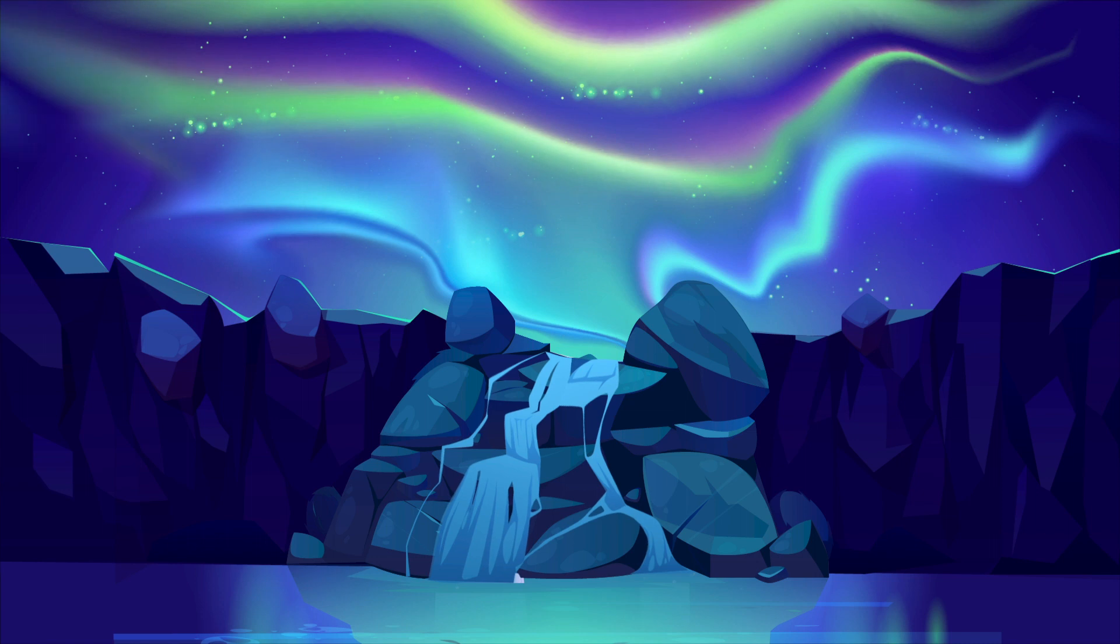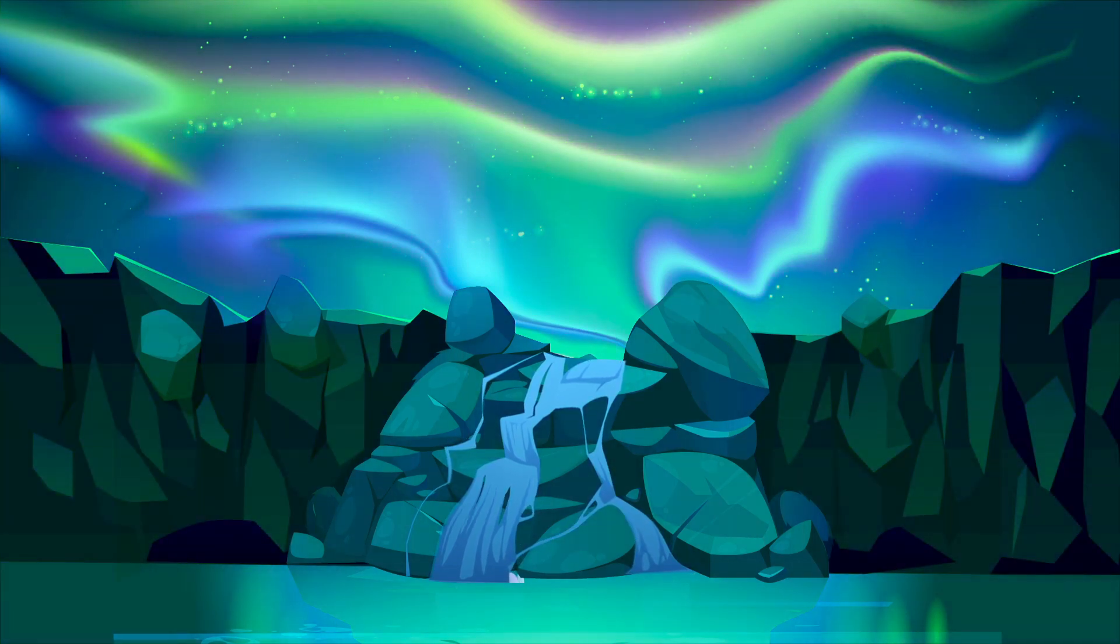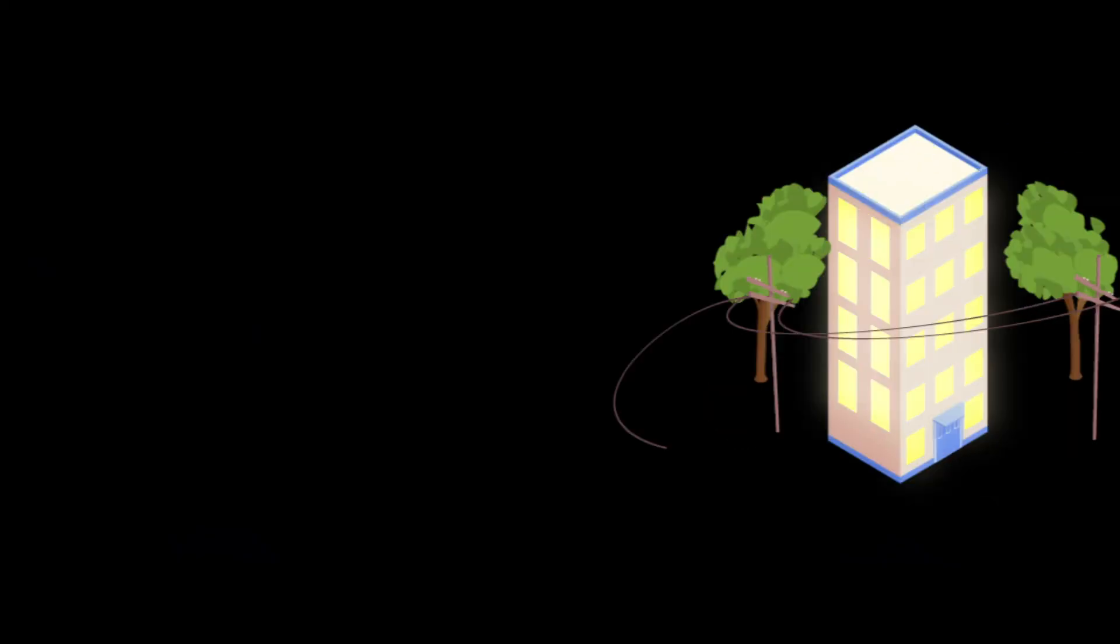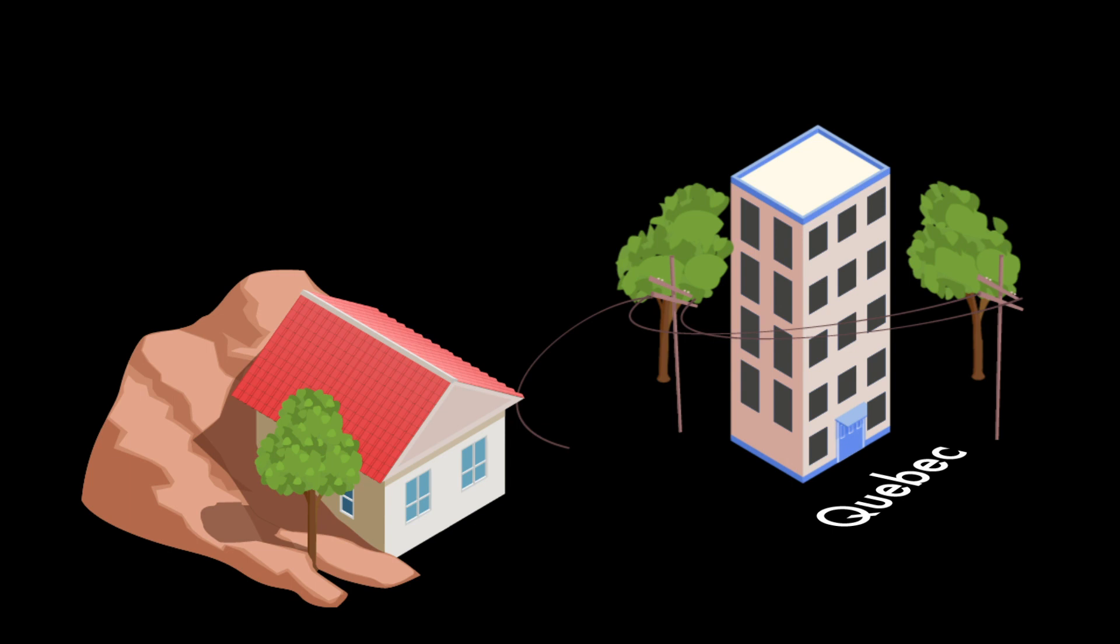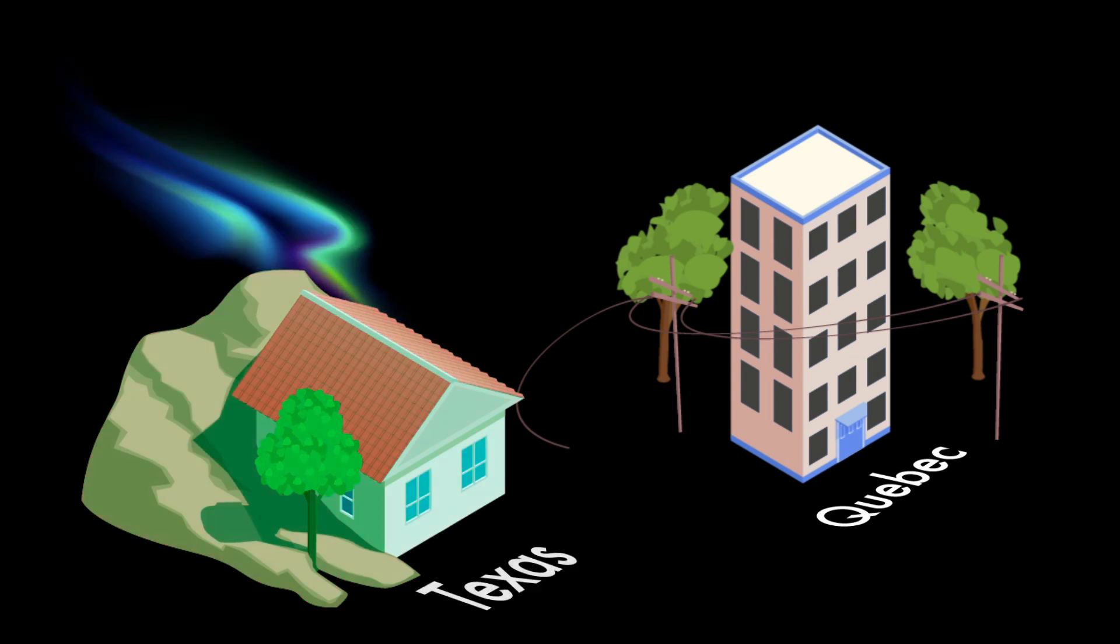Occasionally, these sunborn gales whip up so fantastically that they can kick us right in our delicate electronics. One celestial storm in 1989 hit so hard it took out the entire power grid in Quebec and caused auroras all the way down in Texas.